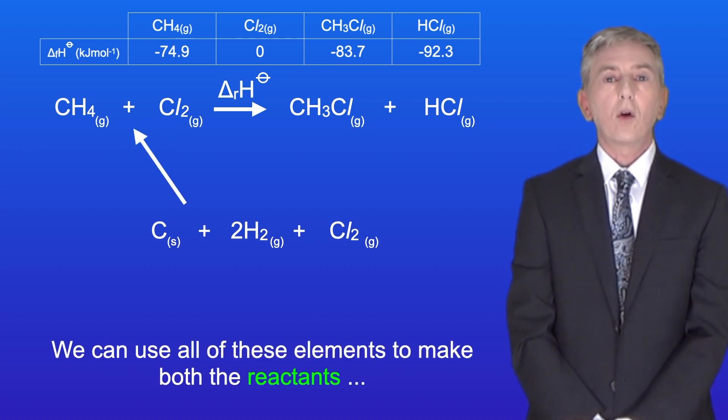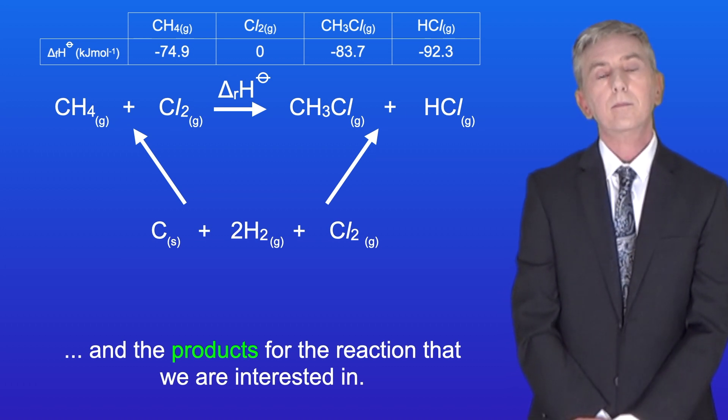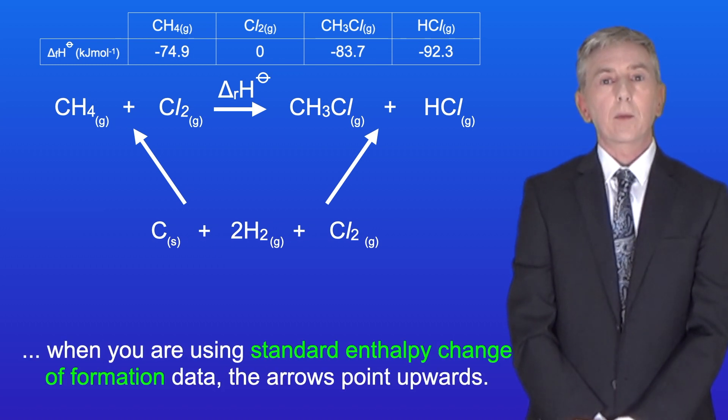Okay, so we can use all of these elements to make both the reactants and the products for the reaction that we're interested in. Now a key point is that for enthalpy cycles like this, when you're using standard enthalpy change of formation data, the arrows point upwards.